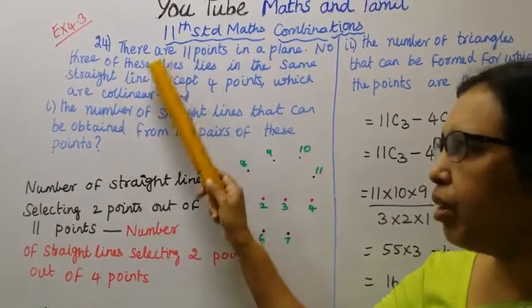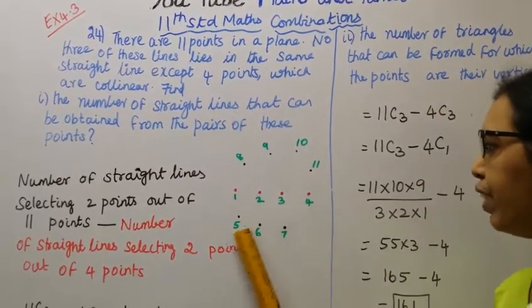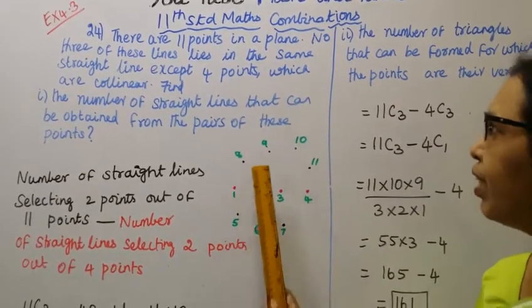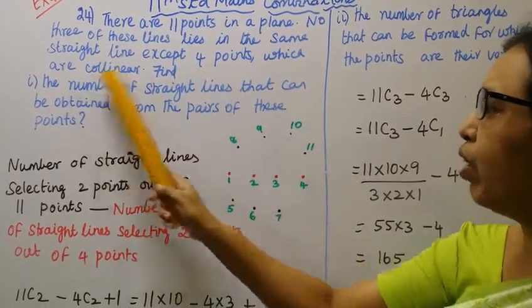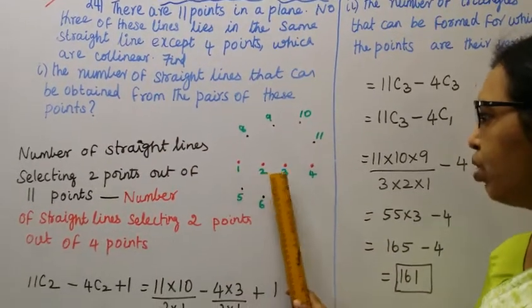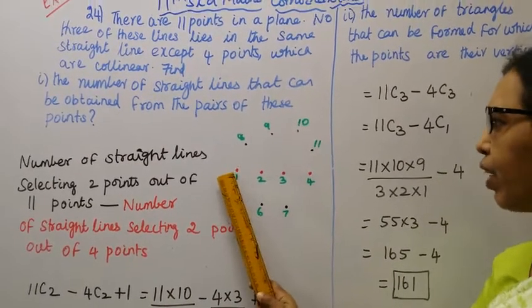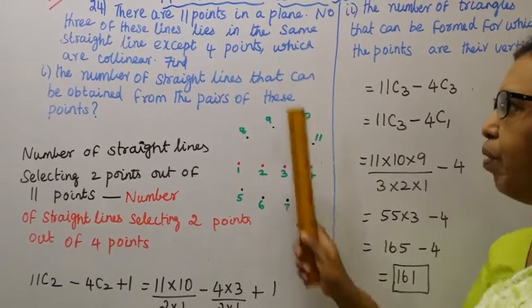I will count: 11 points - 1, 2, 3, 4, 5, 6, 7, 8, 9, 10, 11 points. 3 points don't lie on the same straight line, but 4 points are collinear. They lie on a straight line: 1, 2, 3, 4.